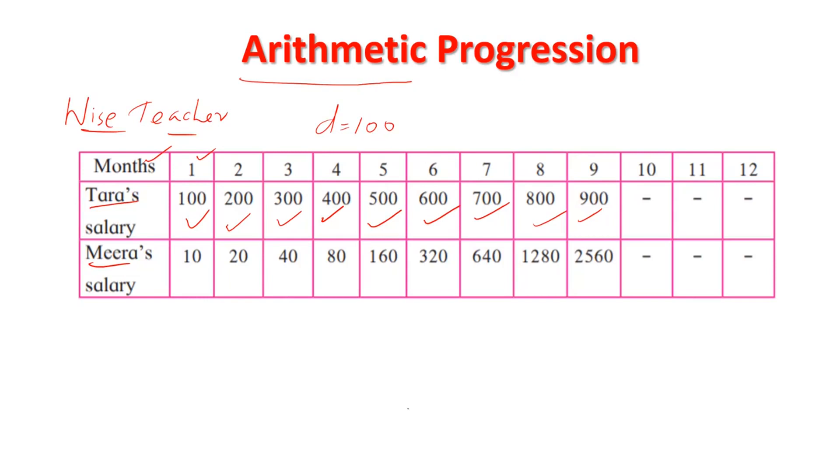But Meera teacher is different. Meera teacher said, I need just 10 gold coins in the first month but I need the double of that next month, then double of that next month. It sounds good because Meera teacher starts work with just 10 gold coins. But by paying 100 gold coins, we appoint Tara teacher. Naturally, this becomes a little more attractive for the employer.